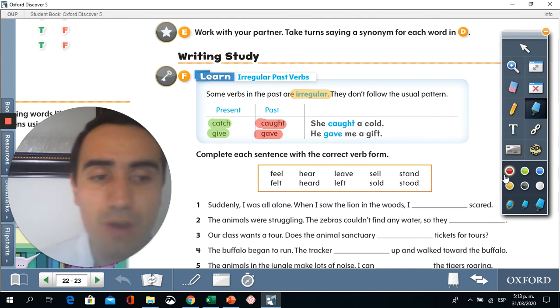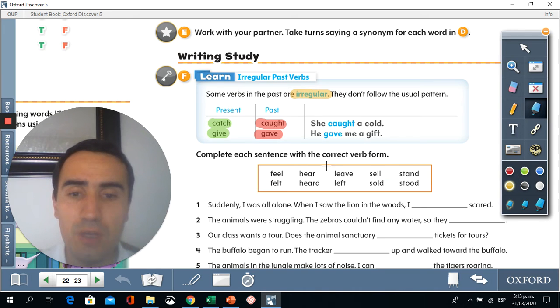Now, here we have other verbs in the past tense. So, for feel, we have felt. For hear, heard. For live, left. For sell, sold. And for stand, stood. These are the verbs you are going to use in this exercise.